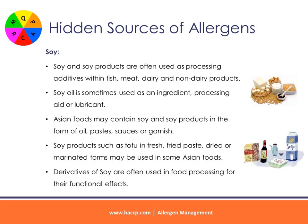Soy: soy and soy products are often used as processing additives within fish, meat, dairy, and non-dairy products. Soy oil is sometimes used as an ingredient, processing aid, or lubricant. Asian foods may contain soy and soy products in the form of oil, pastes, sauces, or garnish. Soy products such as tofu in fresh, fried, paste, dried, or marinated forms may be used in some Asian foods. Derivatives of soy are often used in food processing for their functional effects on processed or manufactured foods.